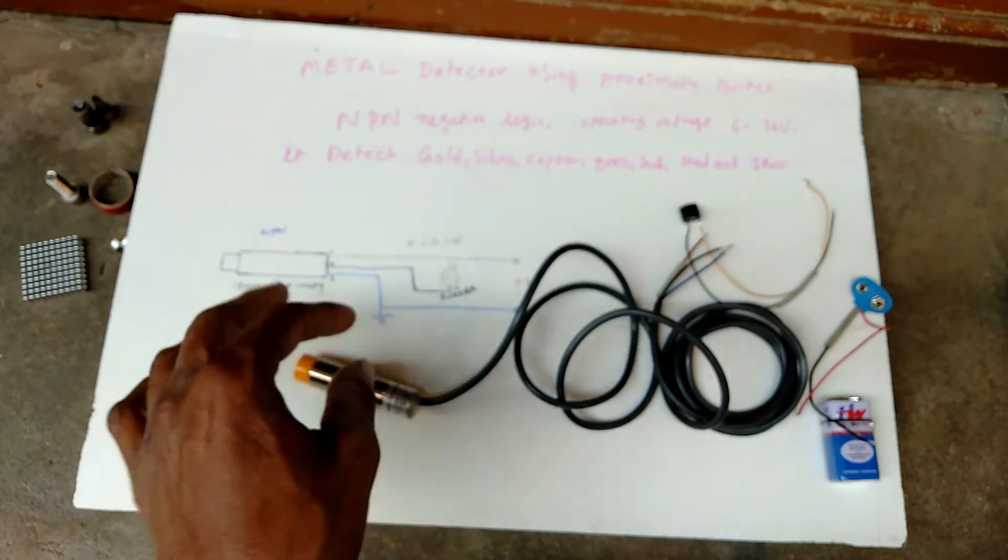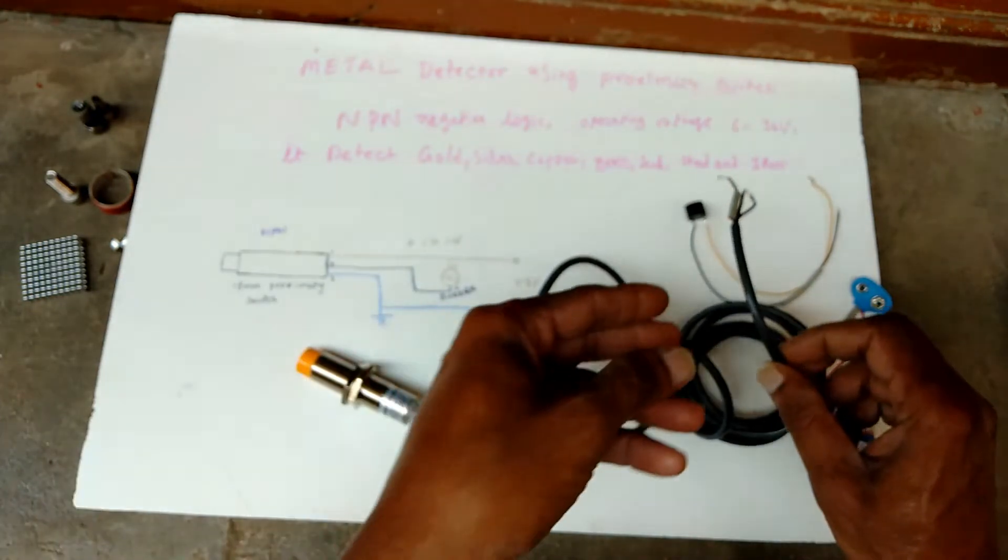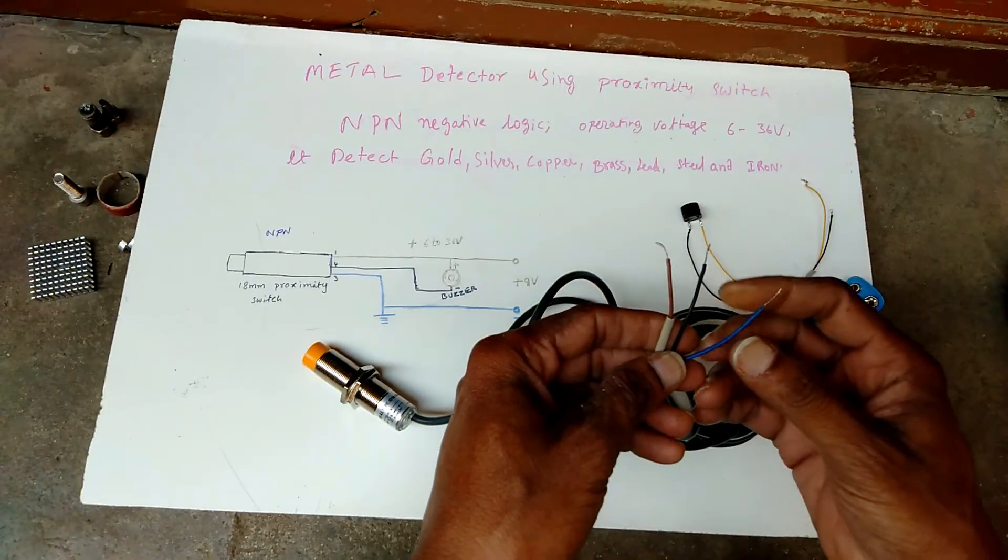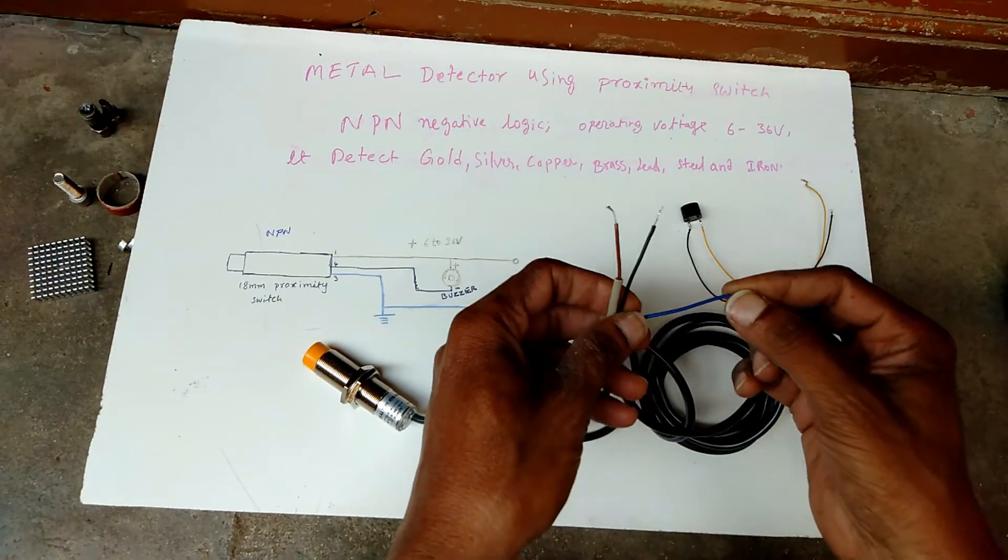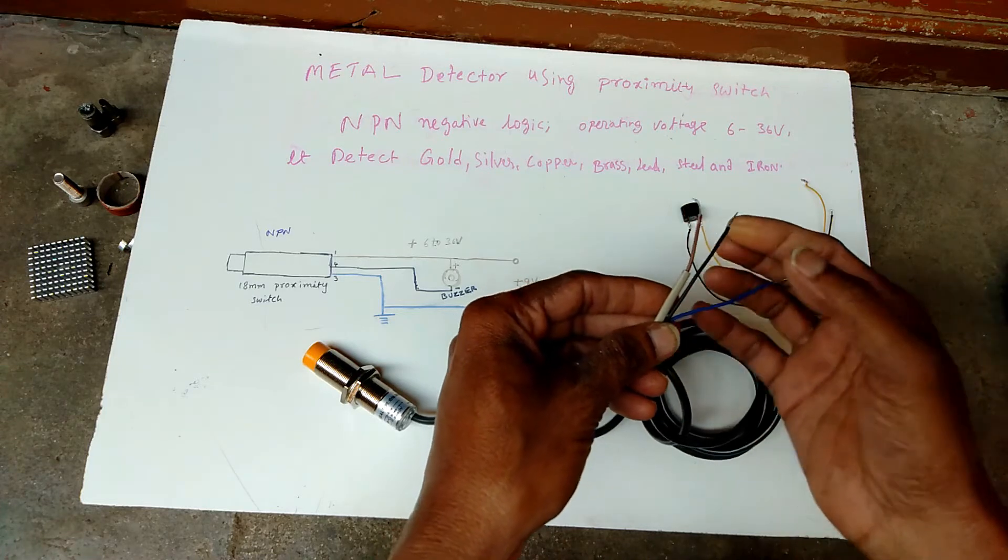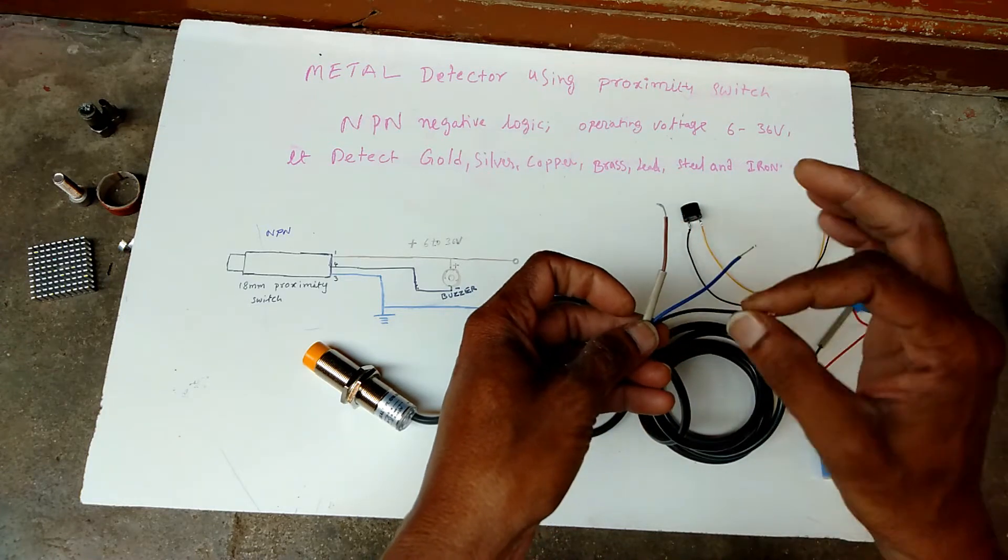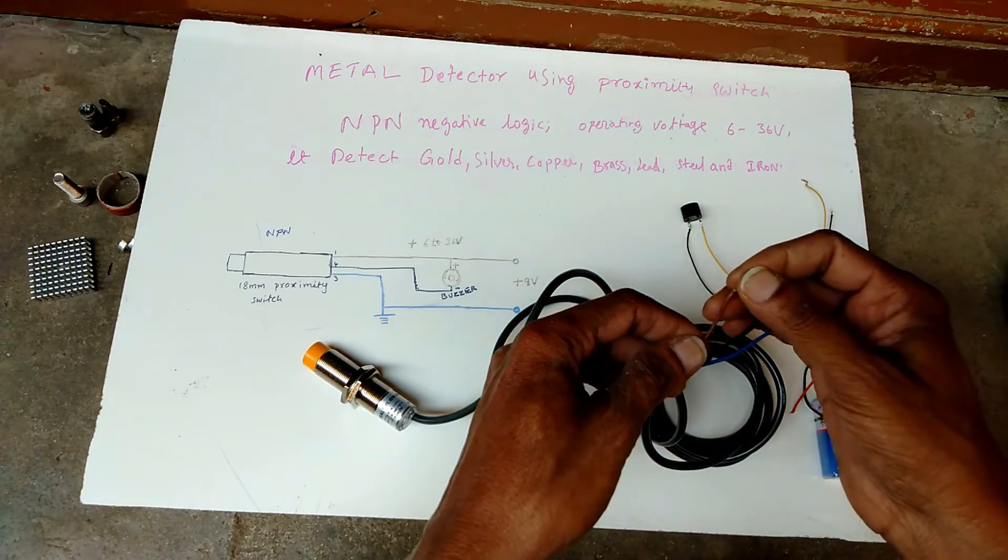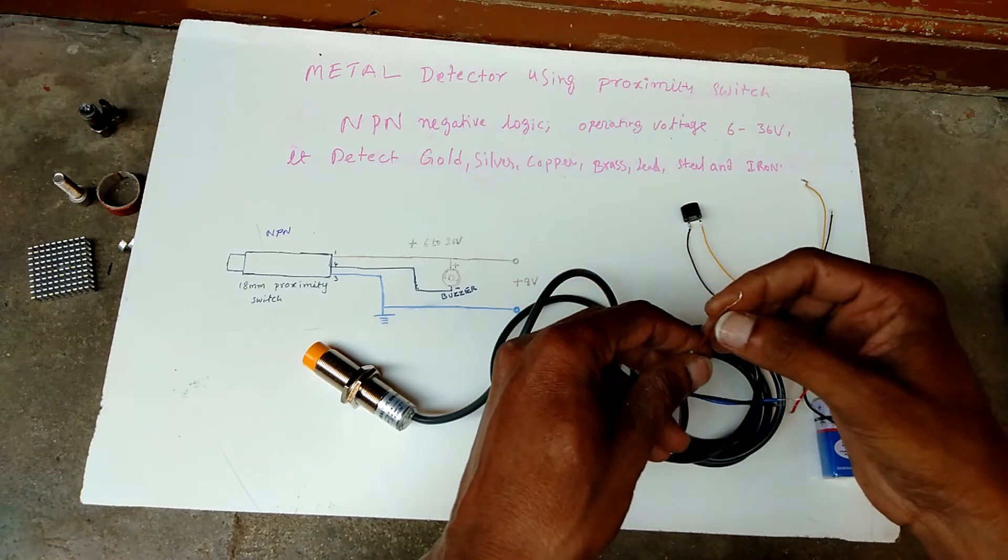In this proximity switch having three color wires. One is blue wire, this one blue wire, and this one black wire output, and brown wire positive.